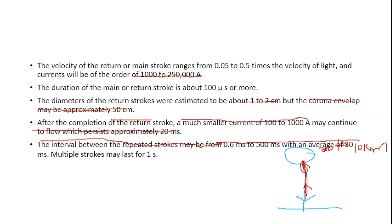The interval between repeated strokes varies from 0.6 milliseconds to 500 milliseconds, with an average of around 30 milliseconds. Multiple strokes may be present for up to one second, meaning total lightning duration may extend to one second. The peak return current from ground is around 250,000 amperes, with a rate of rise varying from 10 kilo-amperes per microsecond or 10^11 amperes per second. The time interval between successive strokes, number of strokes, duration, discharge current, rate of rise, wave front, wave tail, and probability distribution are all key parameters.